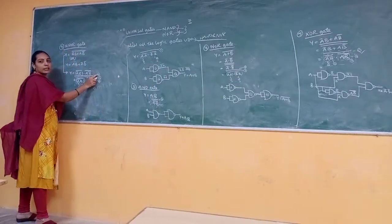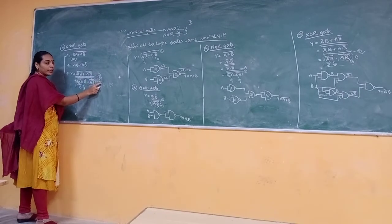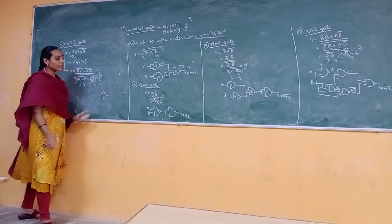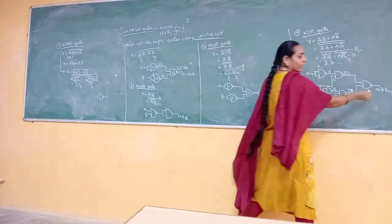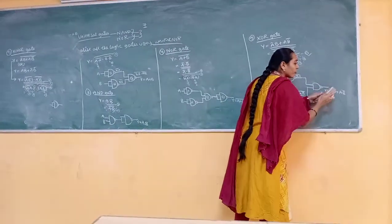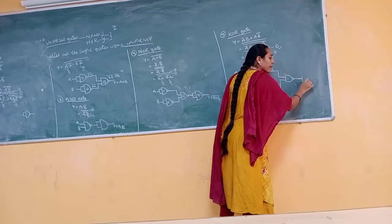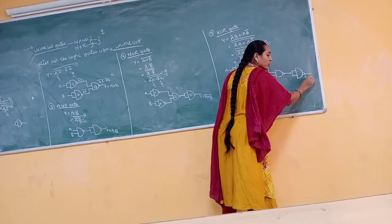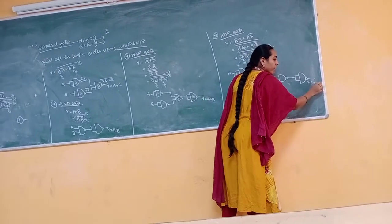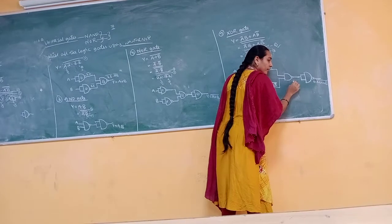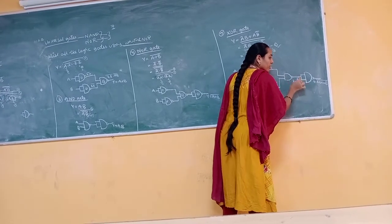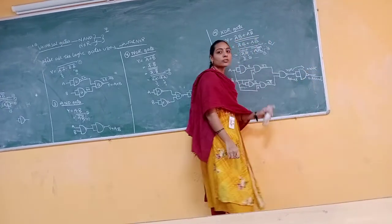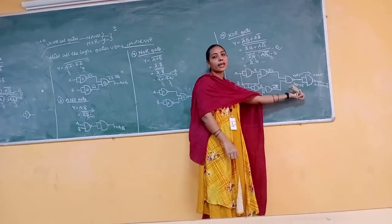For the XNOR gate, we take the XOR implementation and add one additional NAND gate at the output. The XOR circuit gives Y = ĀB + AB̄, and adding one more NAND gate inverts this to give Y = (ĀB + AB̄)̄, which is the XNOR output. So the XNOR gate requires one extra gate compared to XOR.